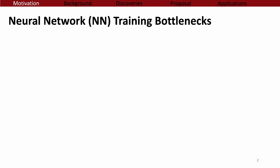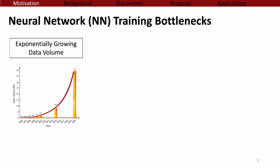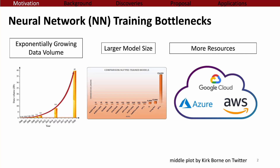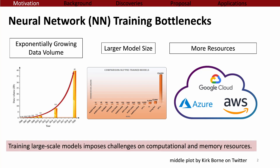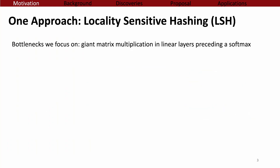Currently, with the exponentially growing data and model size, neural network training needs more computational resources. Since we have limited resources in practice, it is necessary to overcome the bottlenecks and perform efficient training. The bottleneck we focus on is the computation for giant matrix multiplication in linear layers preceding a softmax — for example, the attention layer in transformer models or the output layer for extreme classification models.